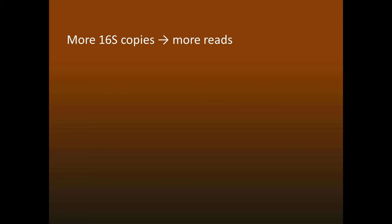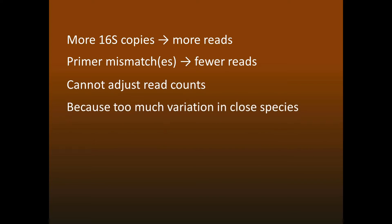Obviously, if there are more copies of the gene, then you get more reads. And if there are primer mismatches, you get fewer reads. Unfortunately, you can't adjust read counts to get accurate frequencies, because there's too much variation in closely related species, so you can't use databases of known species to look up the correction factor. There are some published methods that claim to do this, but unfortunately their benchmark tests are not realistic, and in fact they do not work.